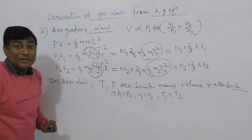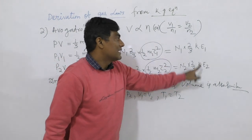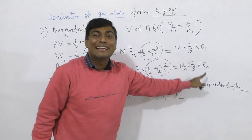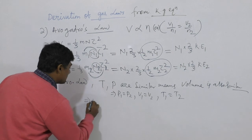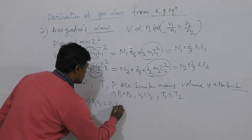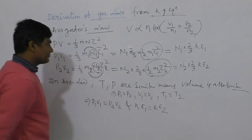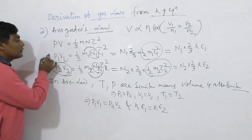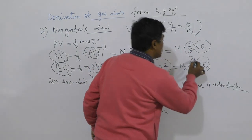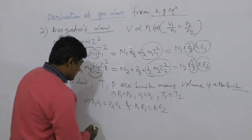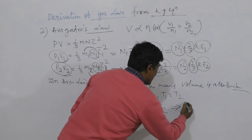P1V1 is equal to P2V2. If temperature is similar, then KE1 is also equal to KE2. Since both the left-hand sides P1V1 and P2V2 are equal, and both the right-hand side factors 2 by 3 KE1 and 2 by 3 KE2 are equal, then N1 must equal N2. If V1 equals V2, then N1 equals N2.